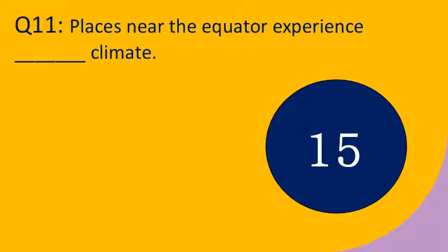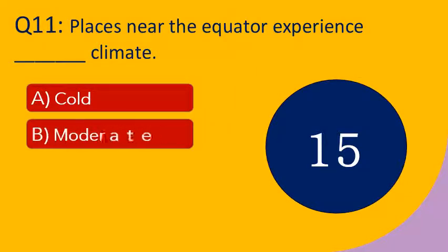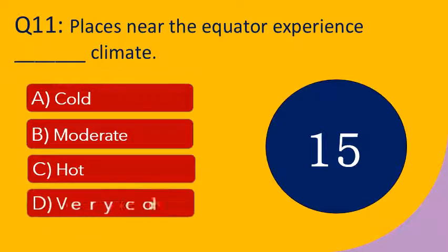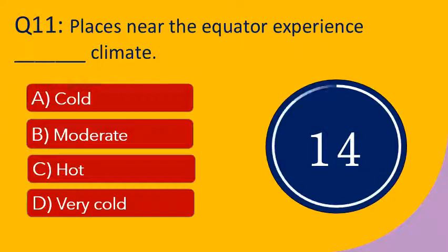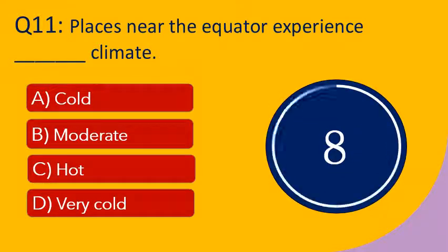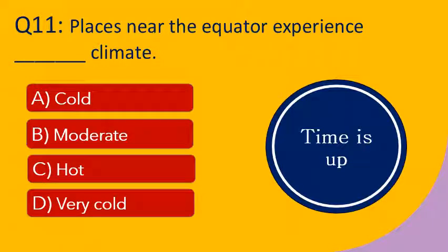Question number 11: Places near the equator experience dash climate. Options are A. Cold, B. Moderate, C. Hot, and D. Very cold. Your time starts now. Your time is up. The right answer is hot. Places near the equator experience hot climate.